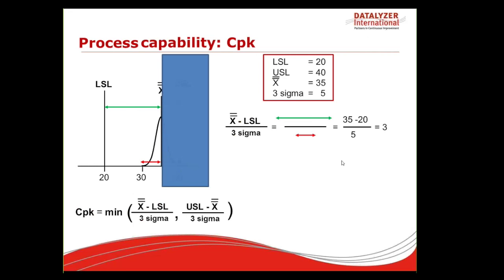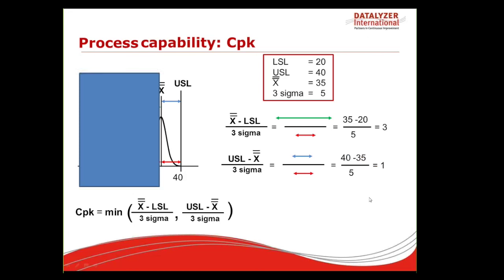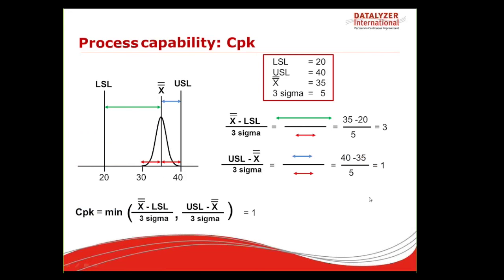In the same way, for the upper side we calculate (USL − X-bar) / 3 sigma — the blue divided by the red. In this case: (40 − 35) / 5 = 1. A CPK of 1 indicates that the 3-sigma border is exactly touching the specification limit. The CPK is the minimum of the two values, so the CPK value equals 1.